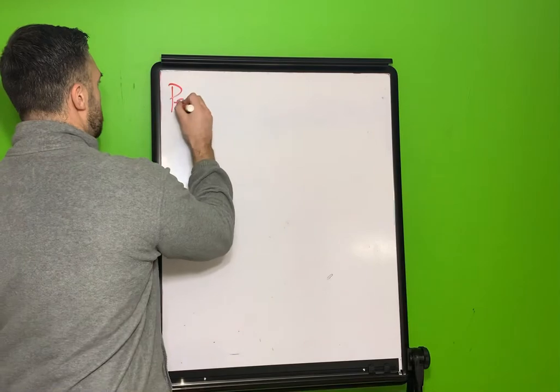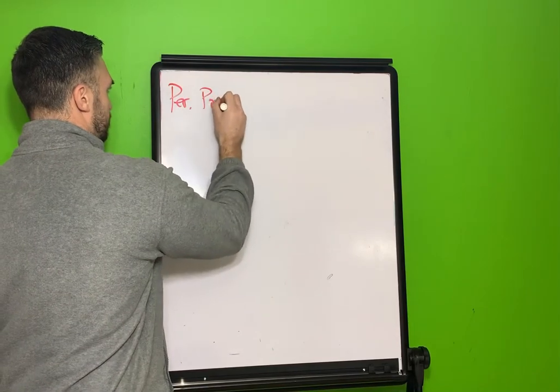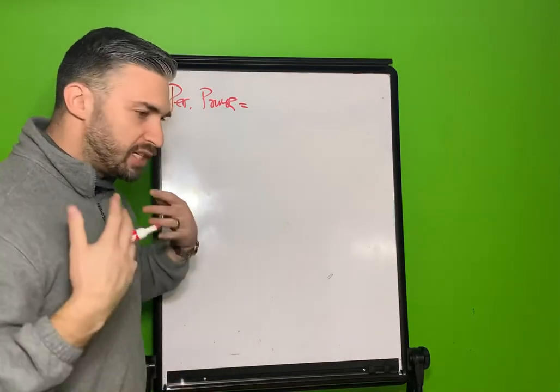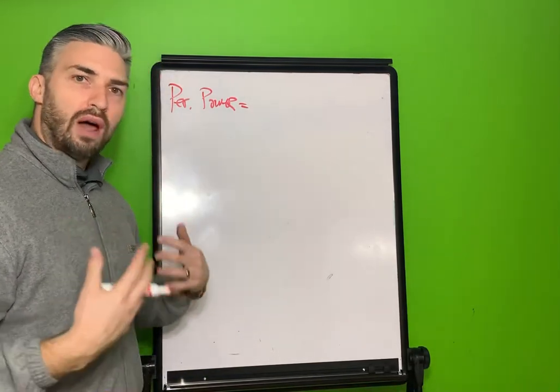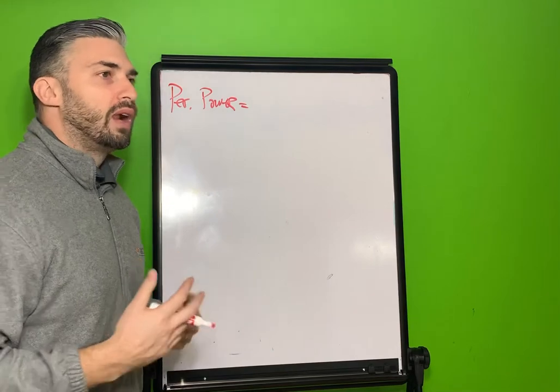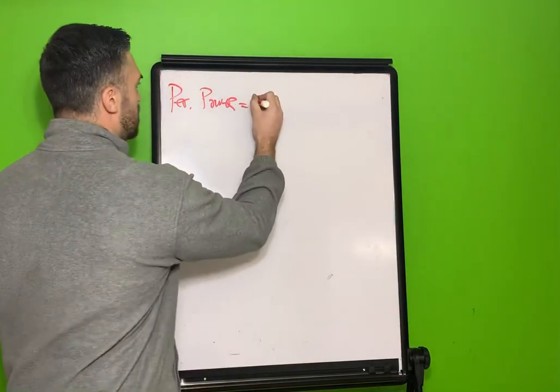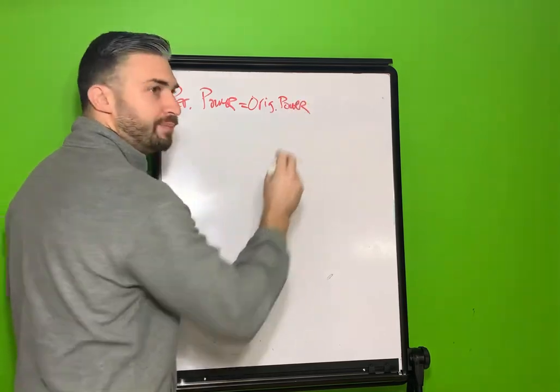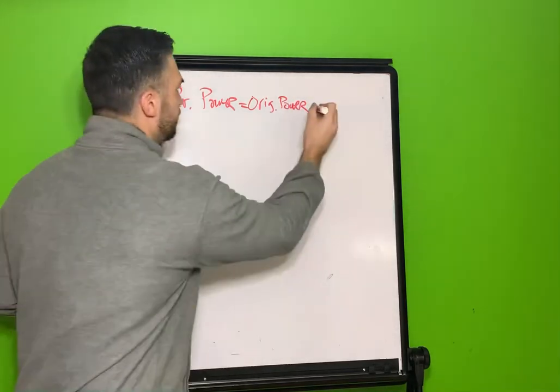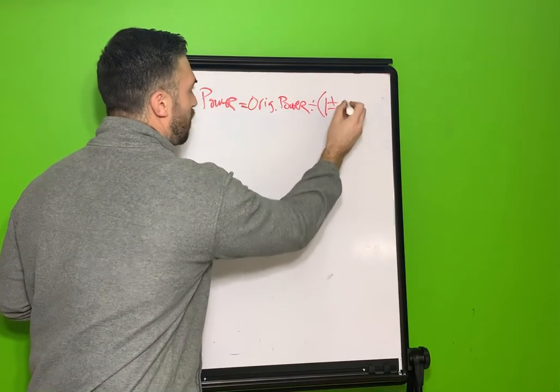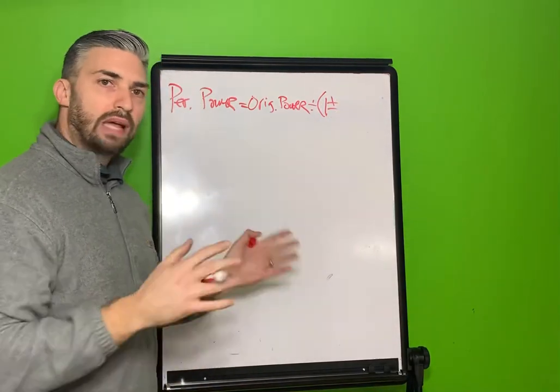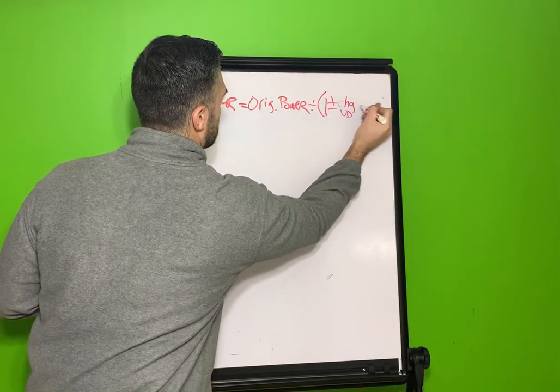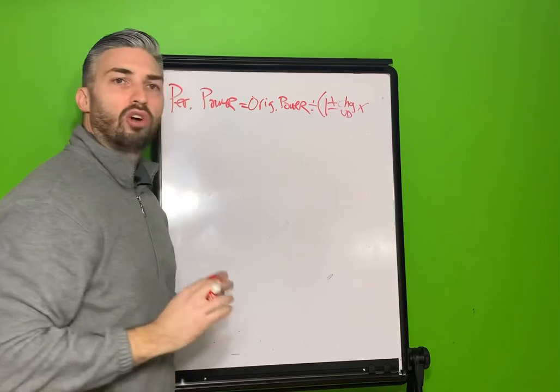The formula is the perceived power, and that's the power that the patient is actually looking through, so it's what you want them to be viewing through. The perceived power equals the original power divided by one plus or minus, and we'll get into that. The change in vertex distance. So I'm going to put change in vertex distance times the original power.